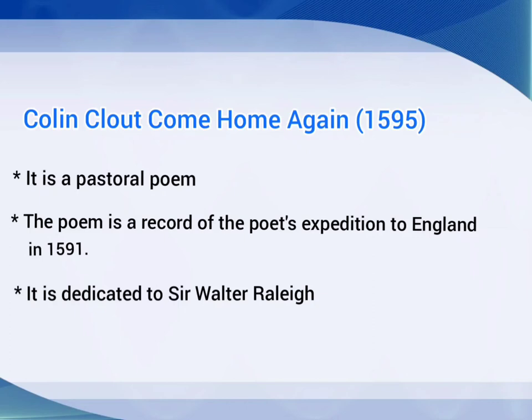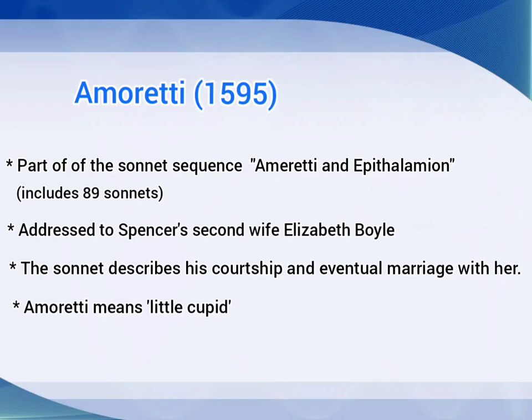The next poem is Colin Clout's Come Home Again. It is published in 1595. It is a pastoral poem. The poem is a record of the poet's expedition to England in 1591, and it is dedicated to Sir Walter Raleigh.